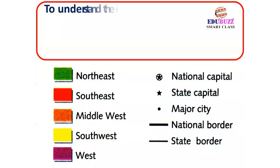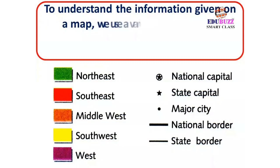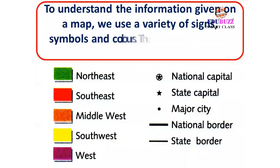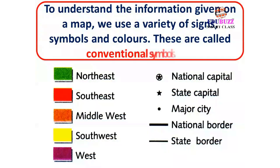To understand the information given on a map, we use a variety of signs, symbols and colors. These are called conventional symbols.